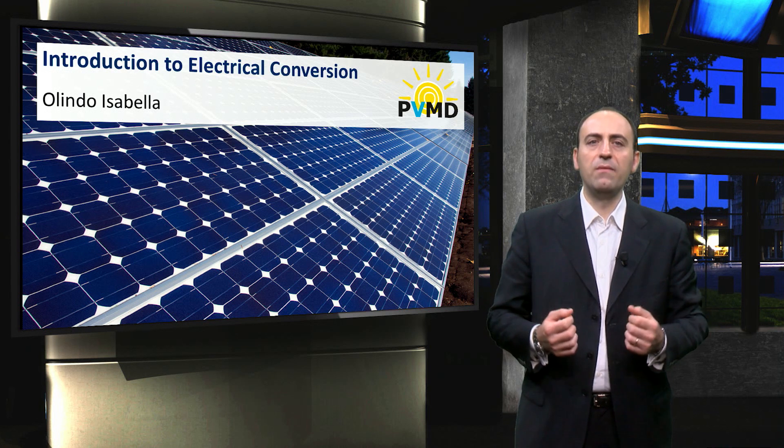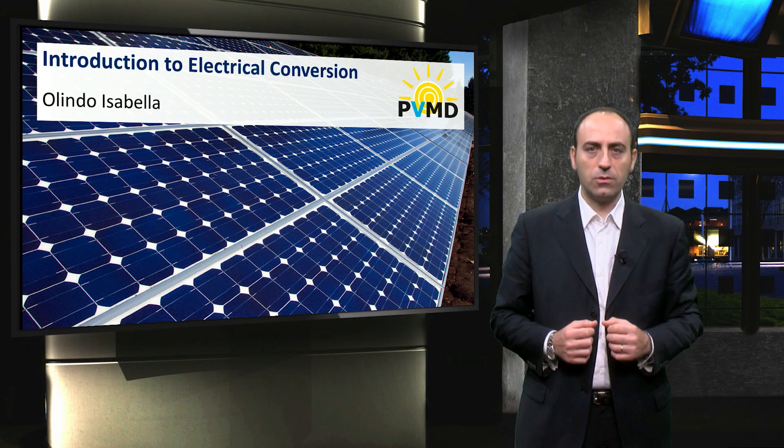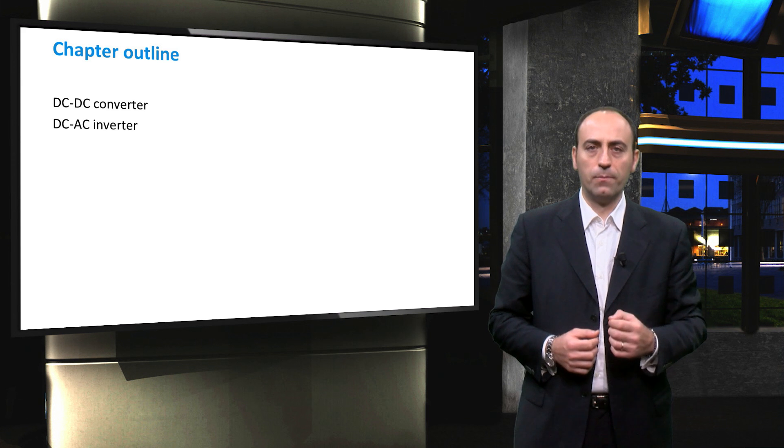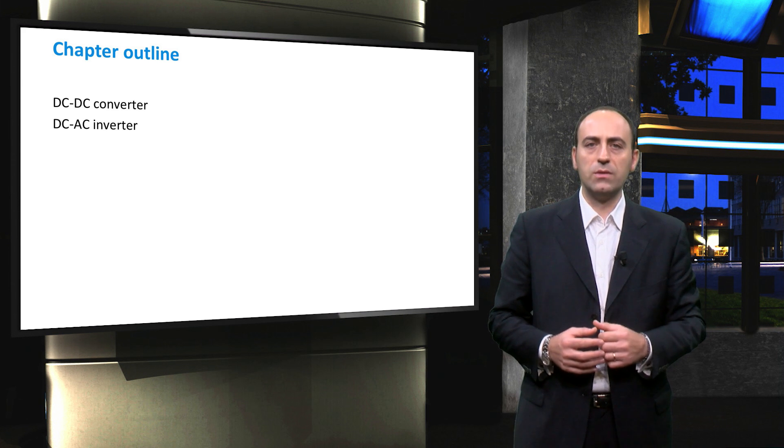A core device associated with PV systems is the converter, which is based on power electronics. Hence the topics treated in this chapter are two: DC to DC converter and DC to AC inverter. Both of them belong to the balance of the system.